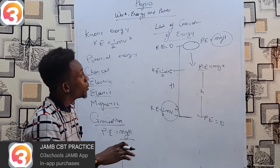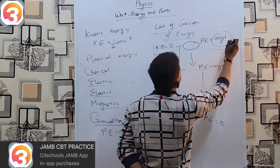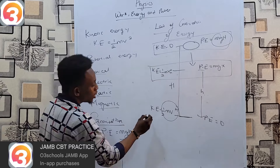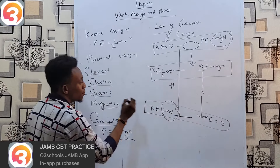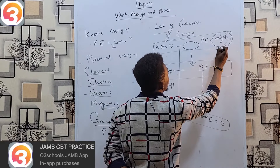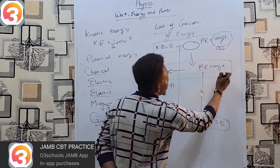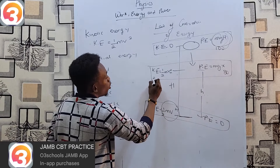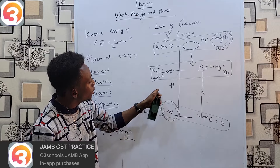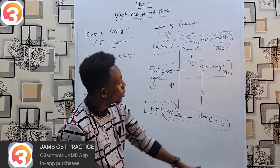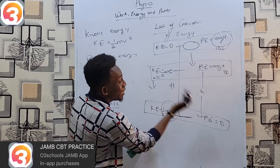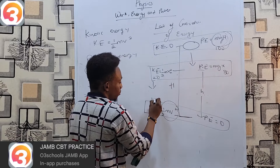The total energy at any point remains equal to the total energy at any other point — energy doesn't go missing. For example, if potential energy starts at 100 J and reduces to 80 J, kinetic energy must become 20 J. The 20 J lost from potential energy is transformed into kinetic energy. As kinetic keeps increasing and potential keeps reducing, potential eventually becomes zero while kinetic becomes 100 J — perfectly conserved throughout.